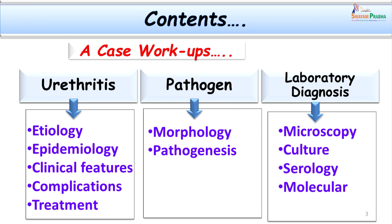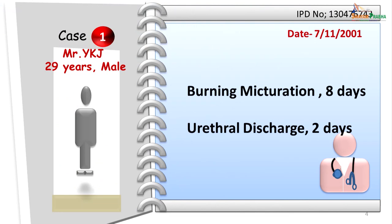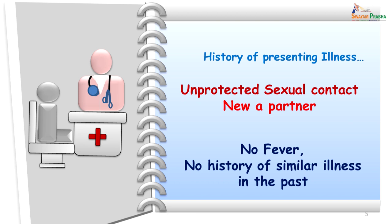Here let us consider a case. A male patient who came with the history of burning urination of about 8 days duration, and he also had purulent urethral discharge which just started 2 days ago. The patient gave the history of having unprotected sexual exposure to a new partner. The patient did not have any significant constitutional symptoms in the past, nor did he receive any treatment for such complaints in the past.